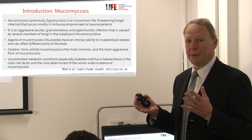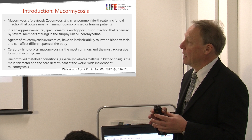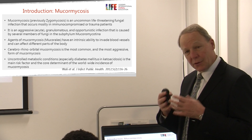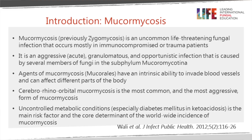It typically occurs in immunocompromised or trauma patients, and also particularly in diabetic patients. It's usually a very aggressive acute infection that can cause granuloma but often causes necrosis of tissue. It's usually an opportunist with many different pathogens involved. These organisms all have in common that they can invade blood vessels, causing tissue necrosis and infarction of the affected area.